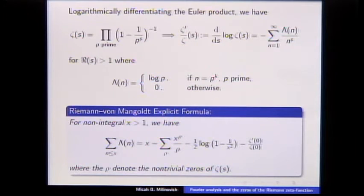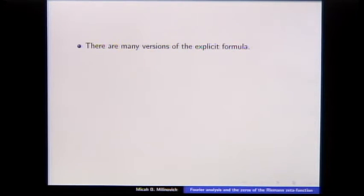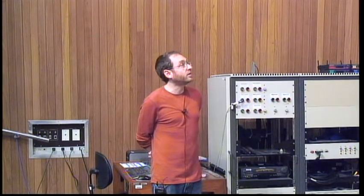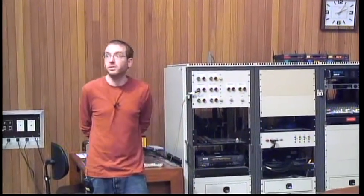I'm going to reverse the process. There are many versions of the explicit formula, and I want to reverse the process and study the zeros of the Riemann zeta function — and later other L-functions — using what we know about the primes. We've been trying to do this in an optimal way, using natural constraints that arise from the number theory end and then trying on the Fourier analysis end to construct functions that meet those criteria in some optimal way.